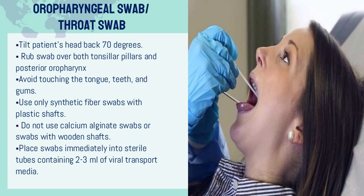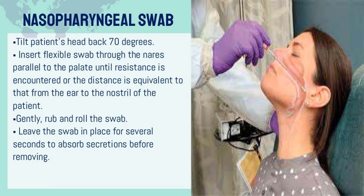For oropharyngeal swab collection: tilt the patient's head back 70 degrees. Rub the swab over both tonsillar pillars and posterior oropharynx, avoiding the tongue, teeth, and gums. Use only synthetic fiber swabs with plastic shafts; do not use calcium alginate swabs or swabs with wooden shafts. Place swabs immediately into sterile tubes containing 2–3 ml of viral transport media. For nasopharyngeal swab: tilt patient's head back 70 degrees, insert the flexible swab through the nares parallel to the palate until resistance is encountered. Gently rub and roll the swab, leaving it in place for several seconds to absorb secretions before removing.